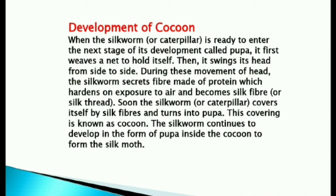Development of cocoon: When the silkworm or caterpillar is ready to enter the next stage of its development called pupa, it first weaves a net to hold itself. Then, it swings its head from side to side. During these movements of the head, the silkworm secretes fiber made of protein which hardens on exposure to air and becomes silk fiber or silk thread. Soon, the silkworm covers itself with silk fibers and turns into pupa. This covering is known as a silk cocoon. The silkworm continues to develop in the form of pupa inside the cocoon to form the silk moth.